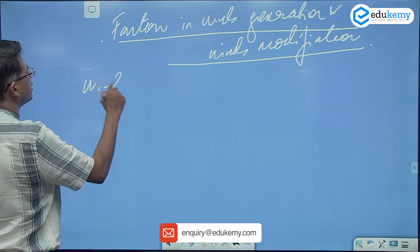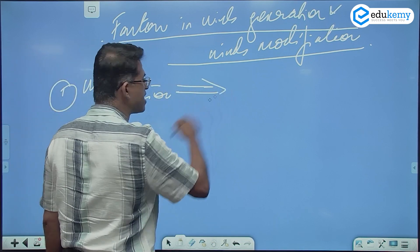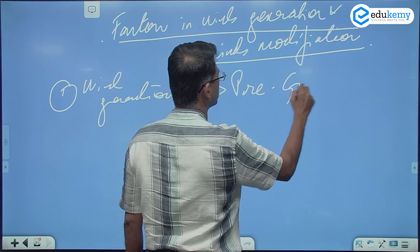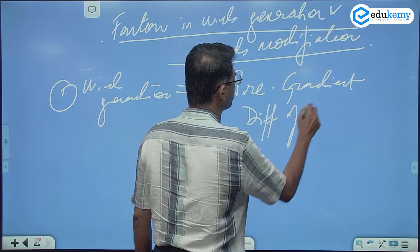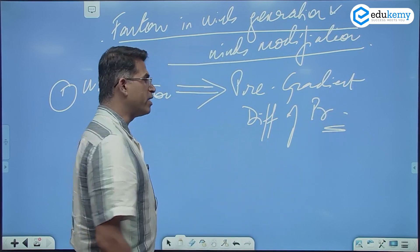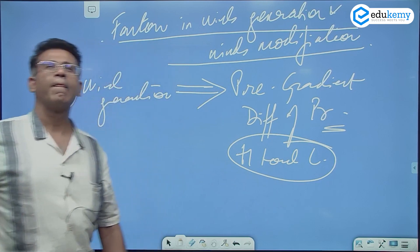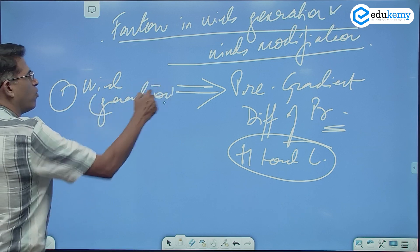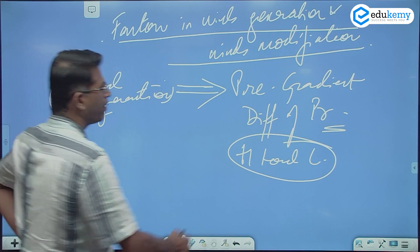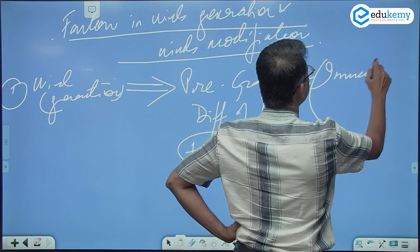So wind generation is always related to the pressure gradient. It is always related to difference of the pressure. Winds are always from high towards low pressure. Yeh rule hai. What are the factors in the winds generation and in the winds modification? Winds ka generation hai. What creates winds? Pressure gradient, difference of pressure. We say this is the immediate factor.